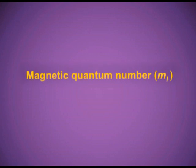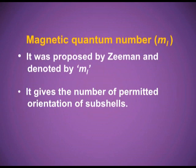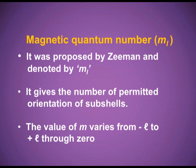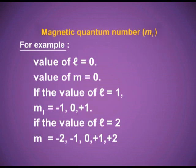The third quantum number is the magnetic quantum number, whose symbol is small m with subscript l. It was proposed by Zeeman. It gives the number of permitted orientations of the subshells. The value of m ranges from −l to +l through 0. For example: if l = 0, then m = 0; if l = 1, then m = −1, 0, +1; if l = 2, then m = −2, −1, 0, +1, +2.